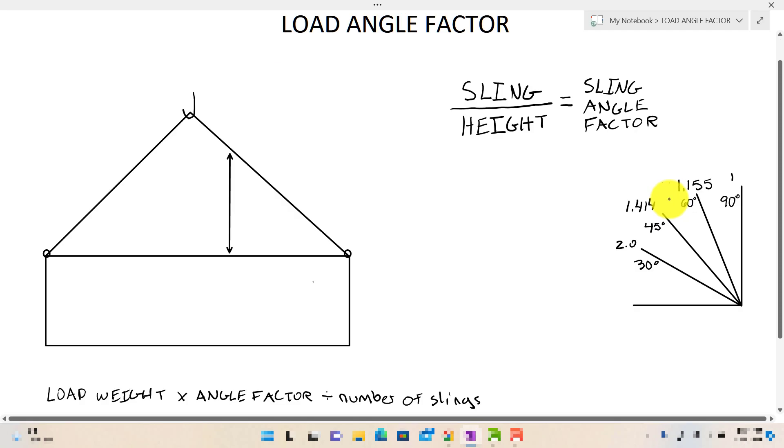Okay, moving on now to the second way to determine the load angle factor. This way is for much more practical use in the field. It's very simple to do as long as you understand to make sure where to get your measurements from. So up here, I have the actual formula, which is sling divided by height equals the sling angle factor.